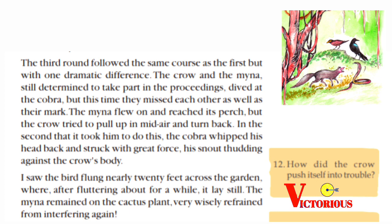The third round followed the same course as the first, but with one dramatic difference. The crow and the mina, still determined to take part in the proceedings, dived at the cobra — but this time they missed each other's face as well as their mark. The mina flew on and reached its perch, but the crow tried to pull up in mid-air and turned back. In the second that it took him to do this, the cobra whipped his head back and struck with great force. The bird was flung nearly 20 feet across the garden. After fluttering about for a while, it lay still. The mina remained on the cactus plant and wisely refrained from interfering again.